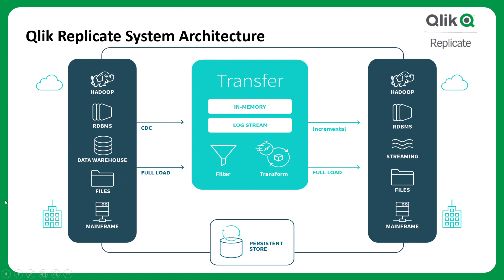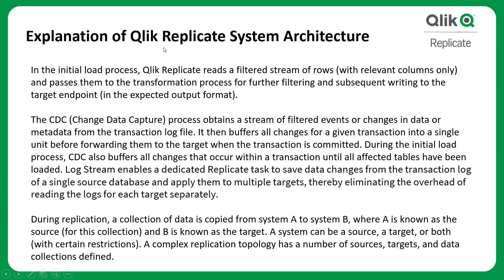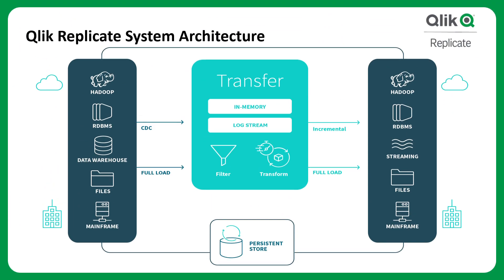Now let's look at the Qlik Replicate system architecture. In this architecture, data is copied from System A to System B — System A is known as the source and System B is known as the target. You can also filter and transform the data. A persistent store is any kind of storage device where you can store your data.